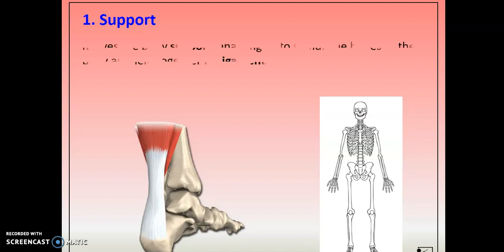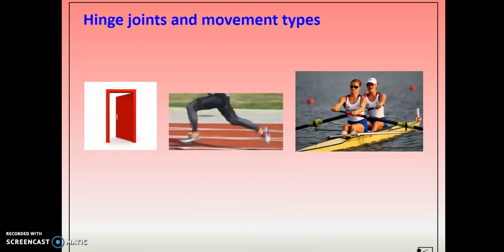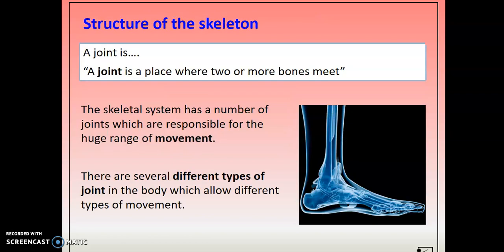In your hand you have carpals, metacarpals, and phalanges. A helpful memory tip: tarsals and metatarsals — T for toes, so those are in your feet; carpals and metacarpals are in your hand. They sound similar so it can get confusing. A joint is a place where two or more bones meet, and it's vital for movement — which is really important for this section because we're talking about movement analysis.